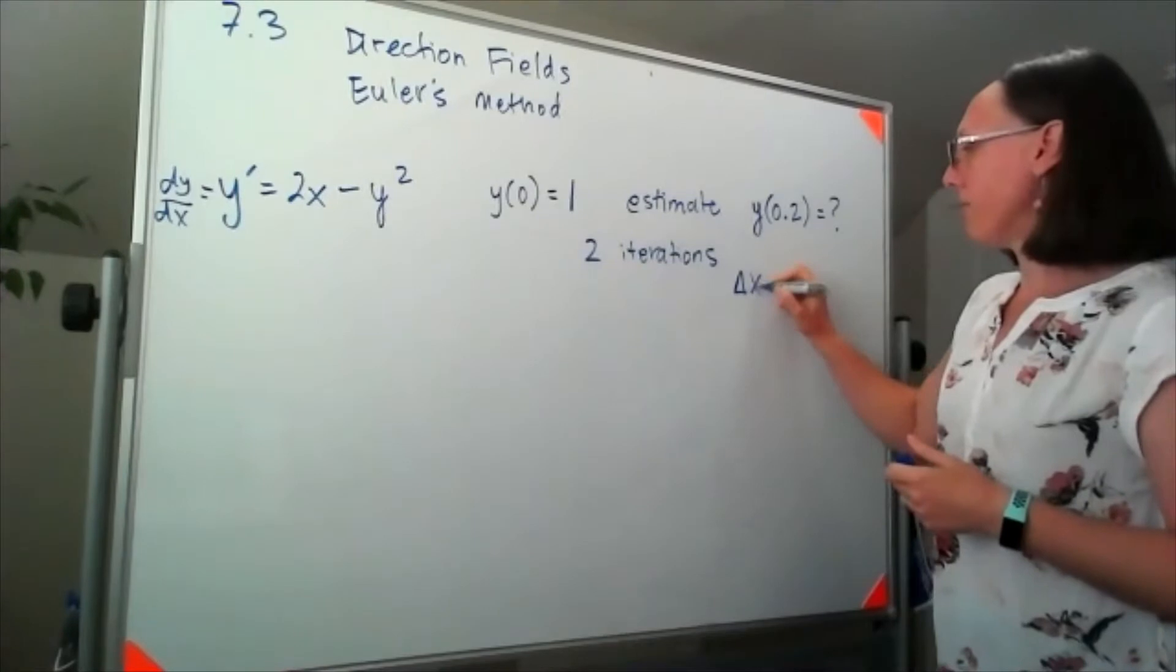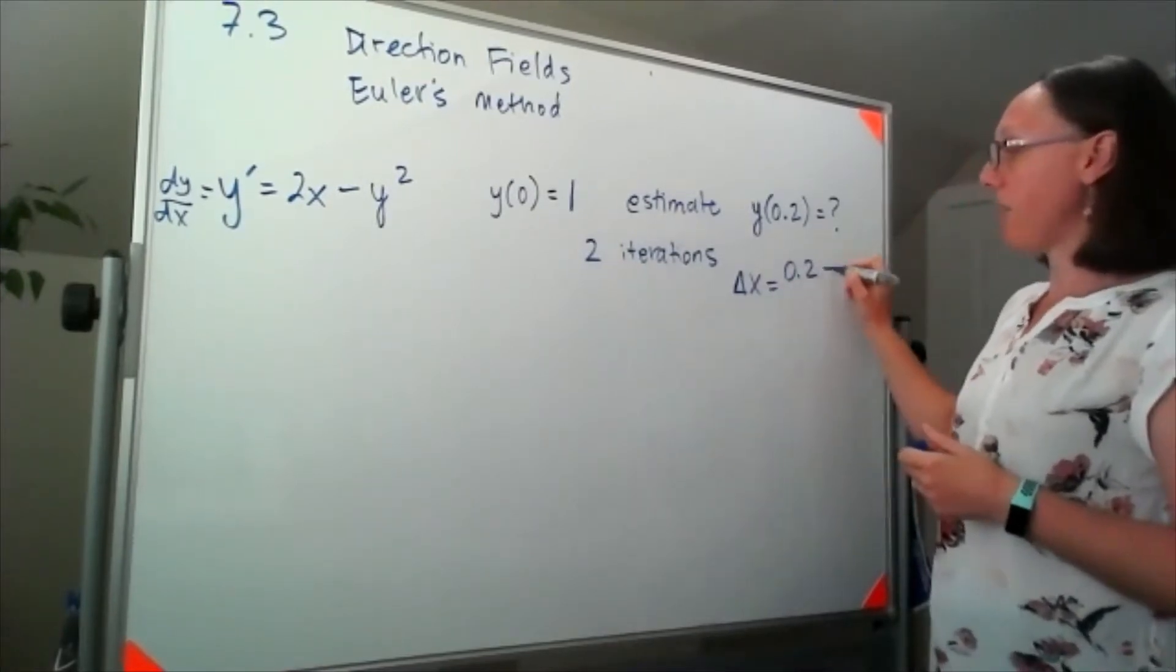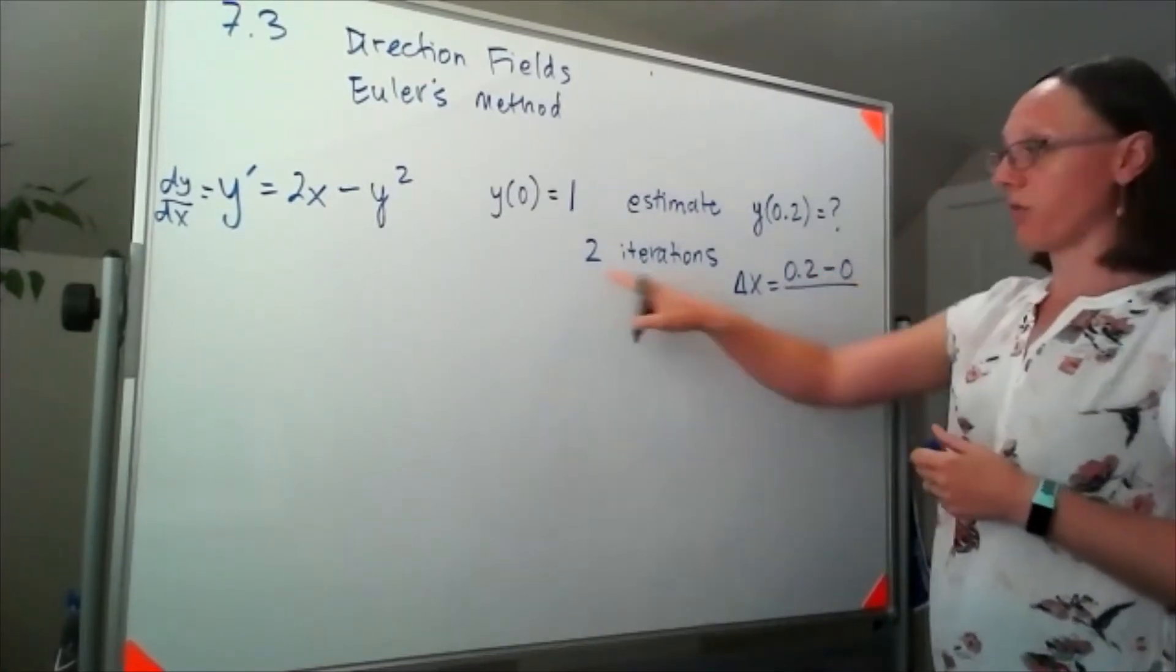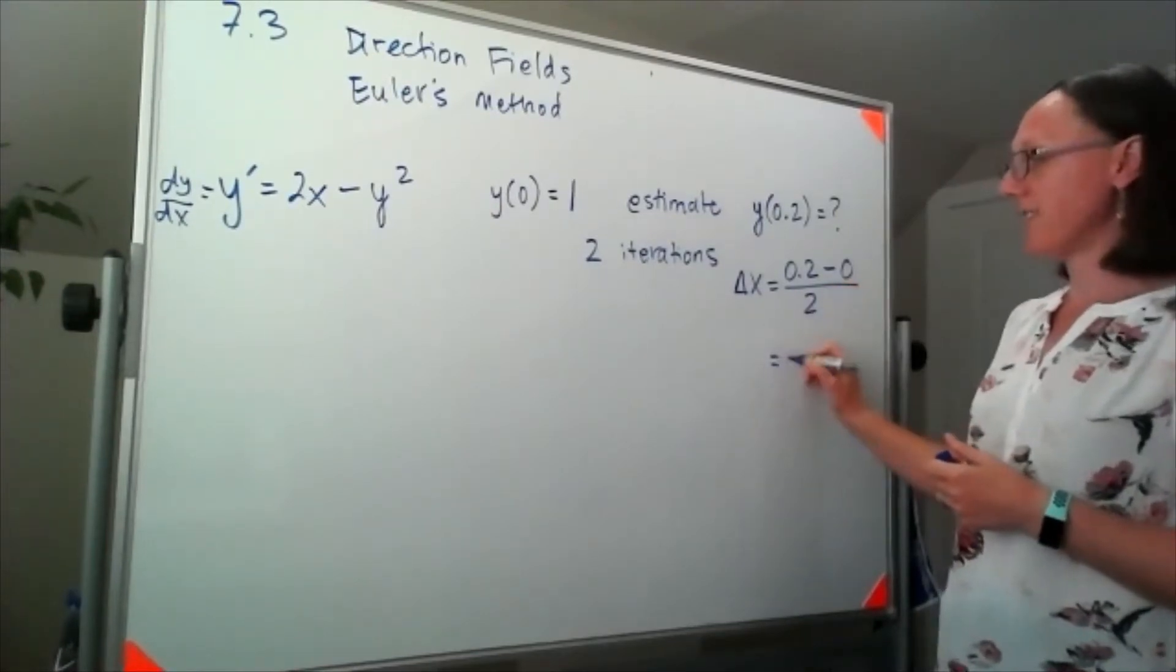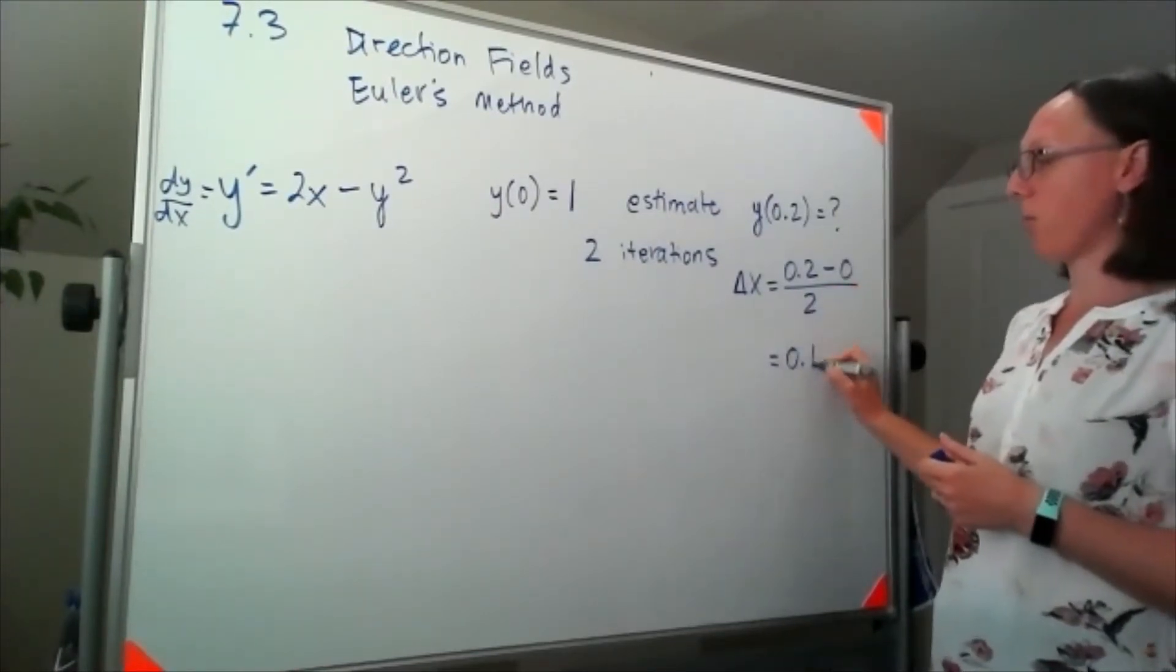So my step size would be essentially b minus a over the number of steps or iterations. So here my step size would be 0.1.